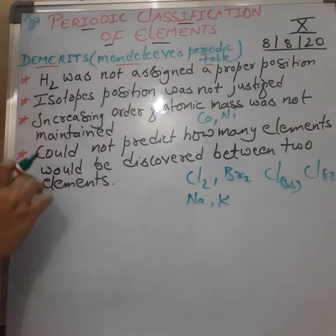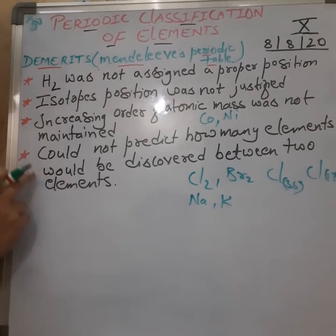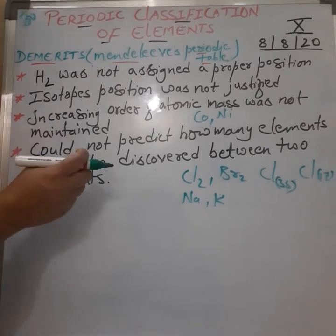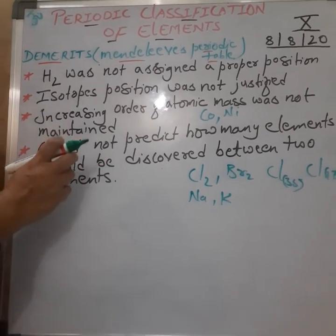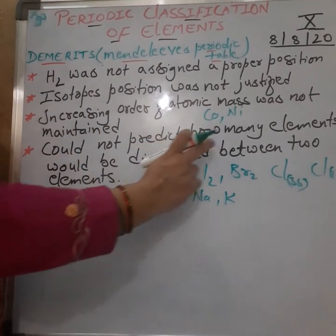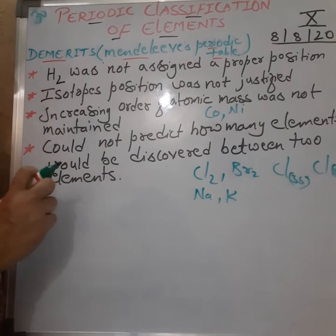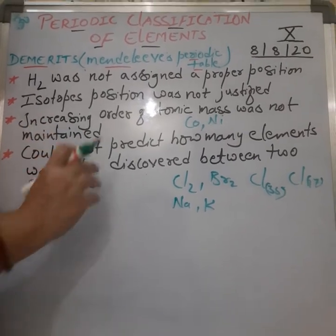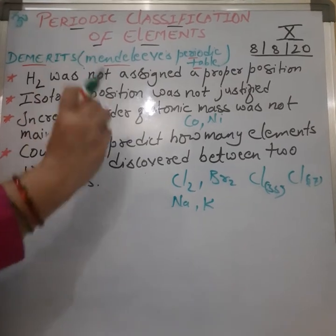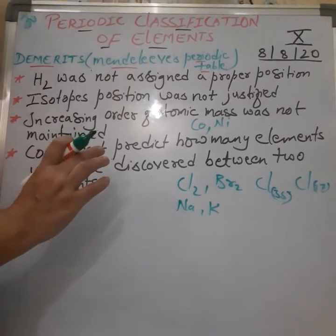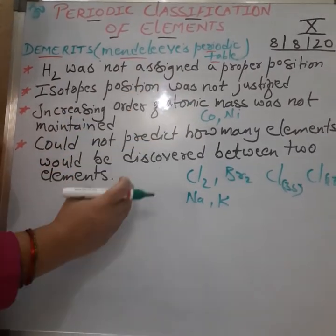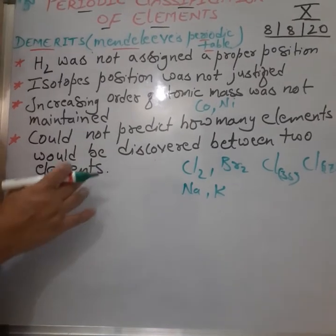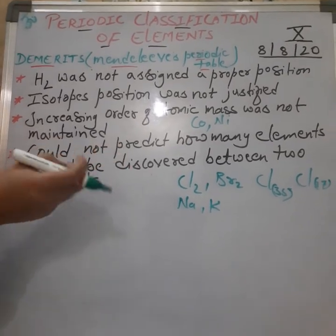The last and very important drawback was that Mendeleev could not predict how many elements would be discovered between two elements. Because atomic mass was not increasing by a definite amount, there were large variations in mass from one element to another, so prediction was not possible.